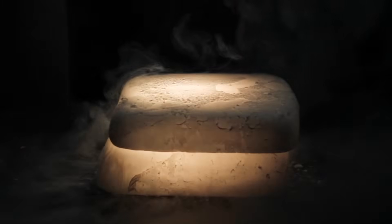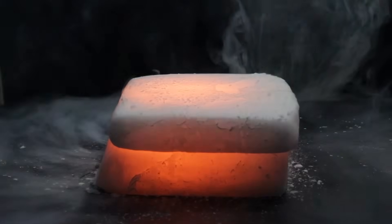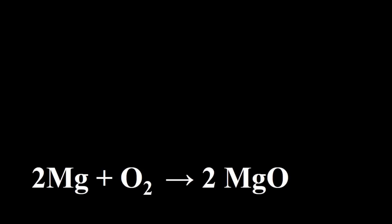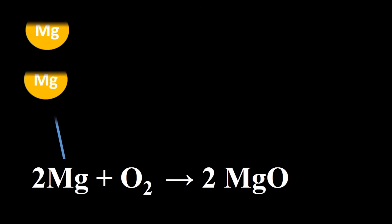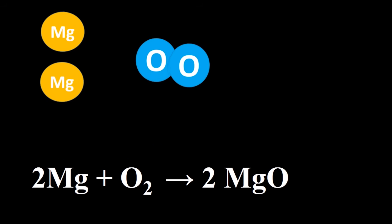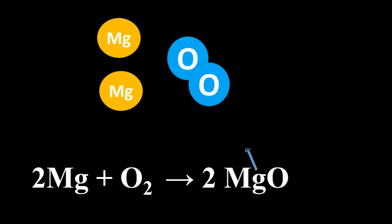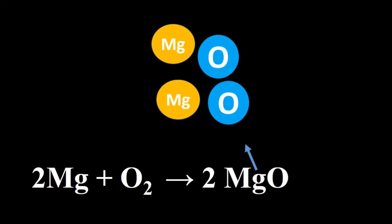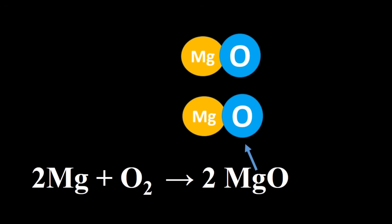Bearded Science Guy here, and today we're going to look at magnesium burning. The first reaction we're going to look at is when magnesium burns in the air. Our air is about 20% oxygen, and with enough activation energy, magnesium atoms will readily bond with these oxygen atoms in the air and create magnesium oxide.